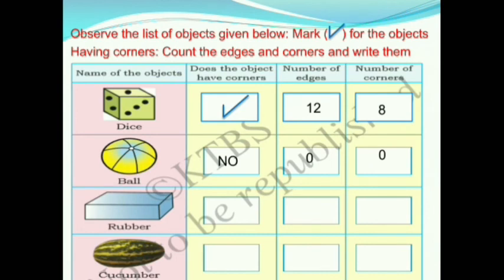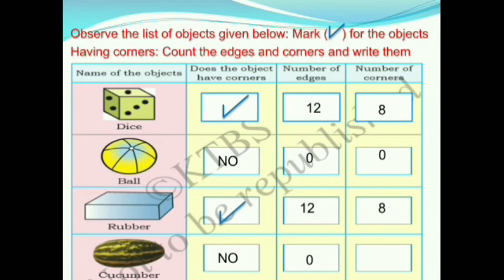Next, we have a rubber which looks like a cuboid. A cuboid has corners, so tick the first box. It has 12 edges, so write 12 in the second box, and 8 corners, so write 8 in the third box. Next is a cucumber — it does not have any corners, so write 'no'. It has no edges, so write 0, and no corners, so write 0.